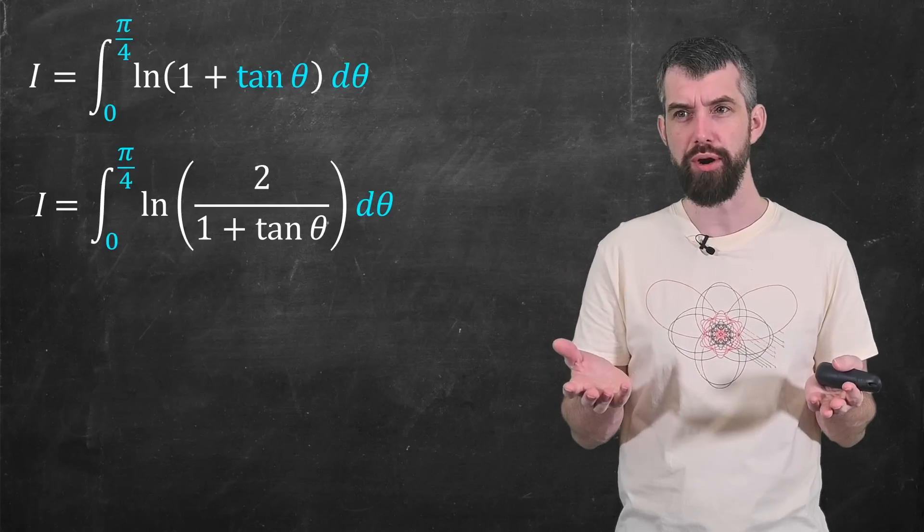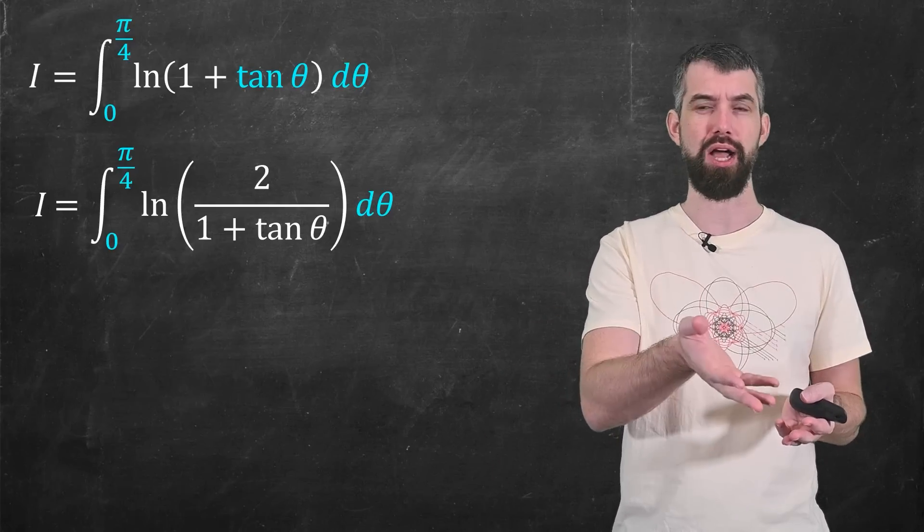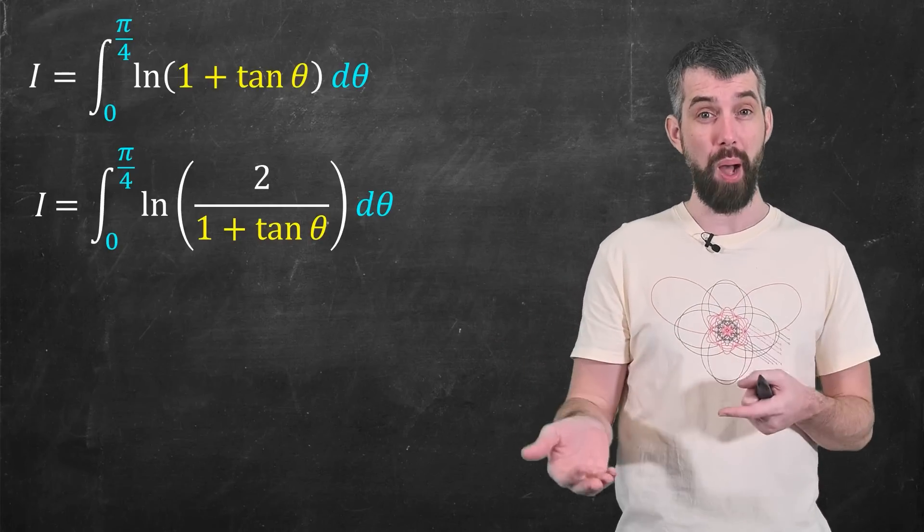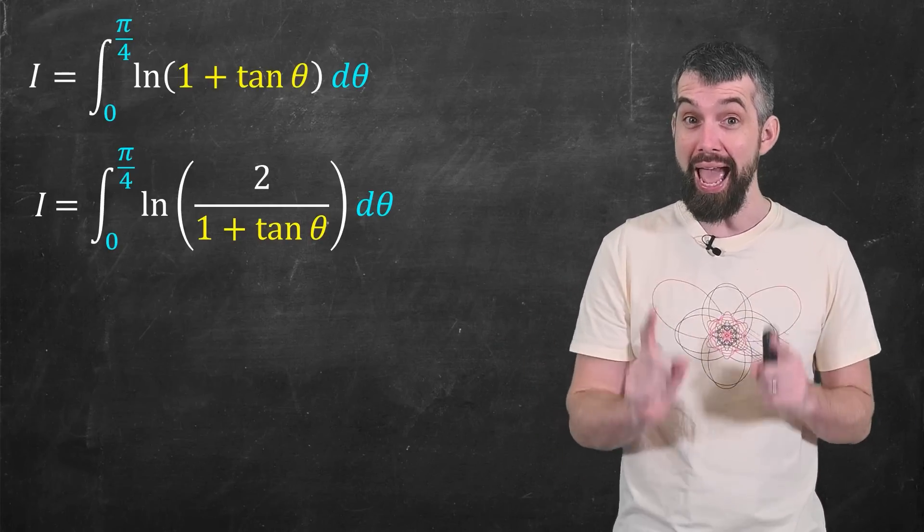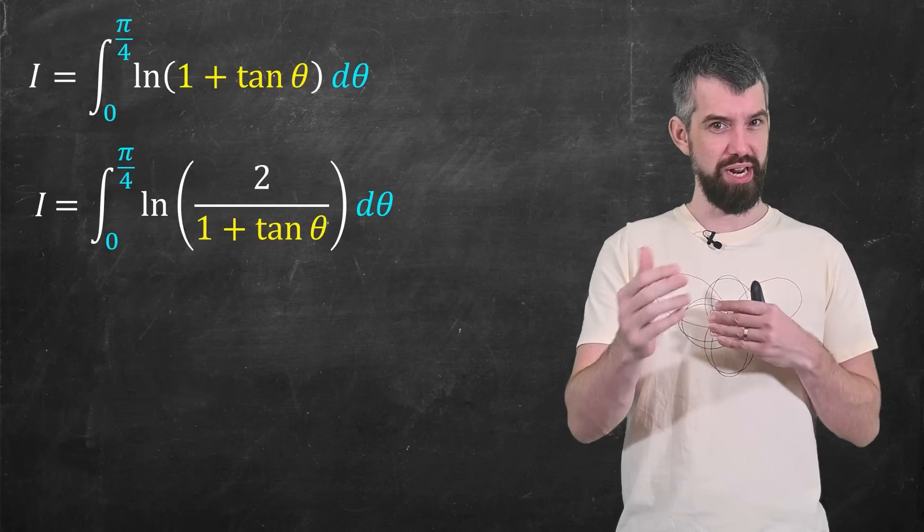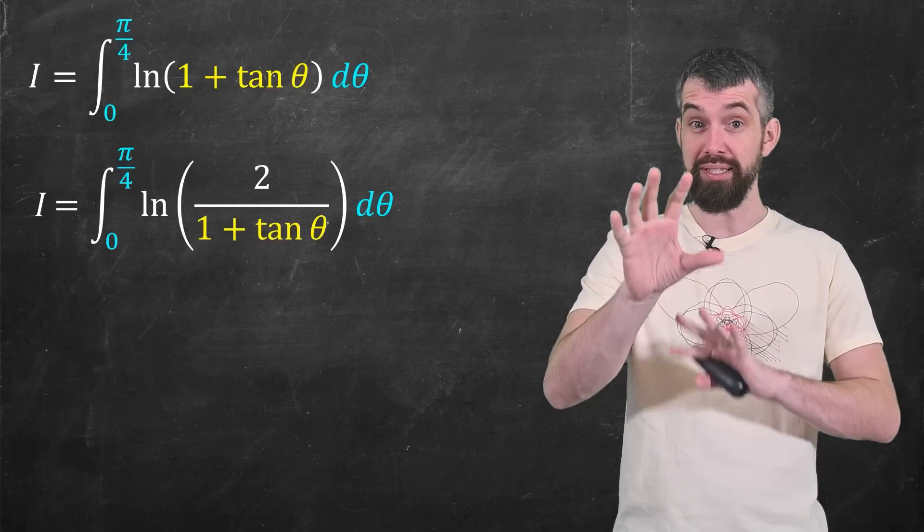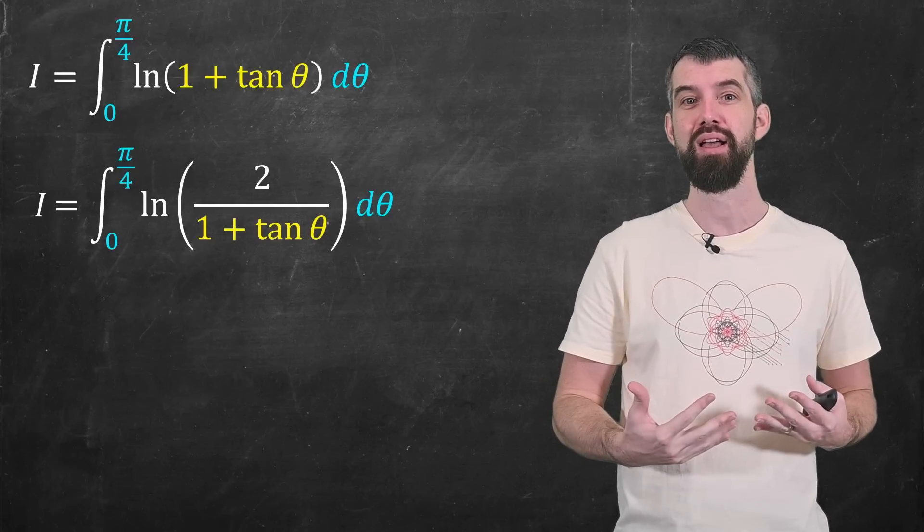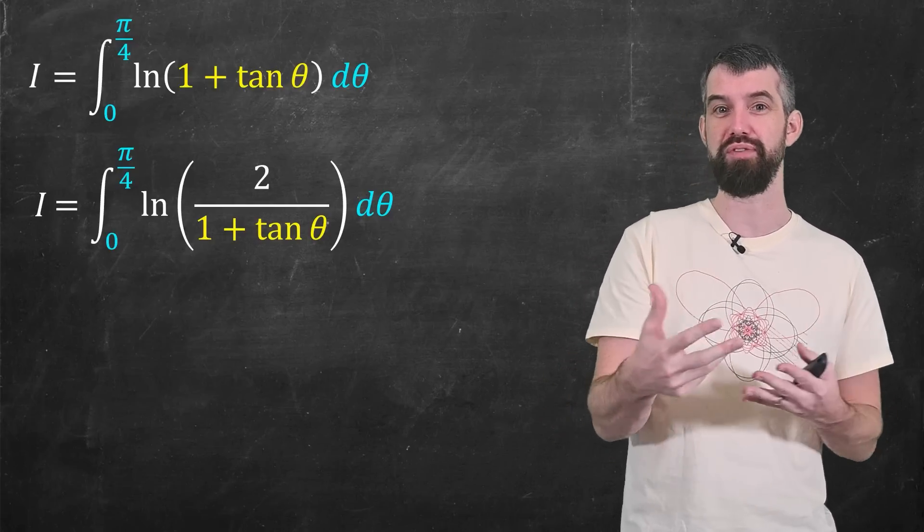But Trevor, isn't this just as hard as the original? Like, you started with logarithm of 1 plus tan theta, now you have a 1 plus tan theta on the bottom. It doesn't seem like you've helped much, but I have. Anytime you're doing integrals and you get two integrals that are very similar to each other, but represent the same number i, then maybe you can do some sort of cancellation.